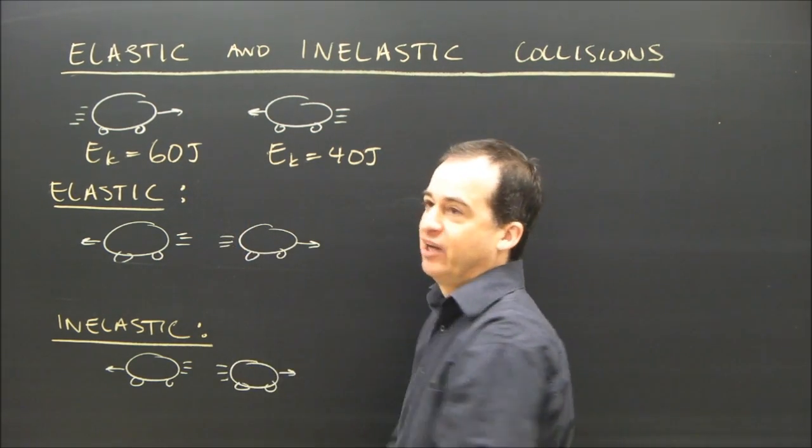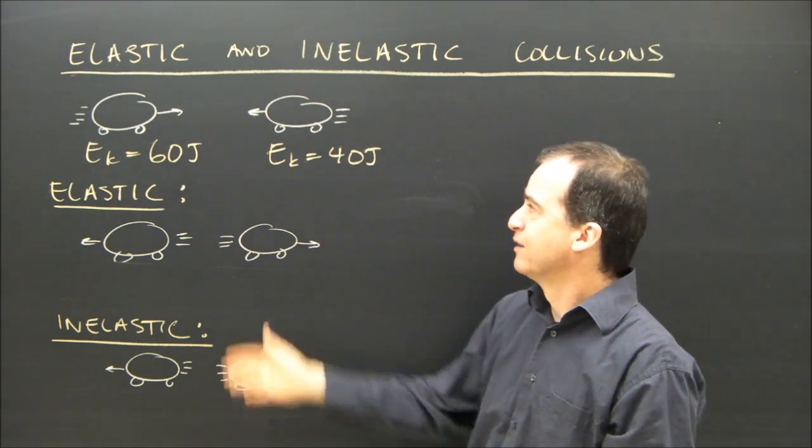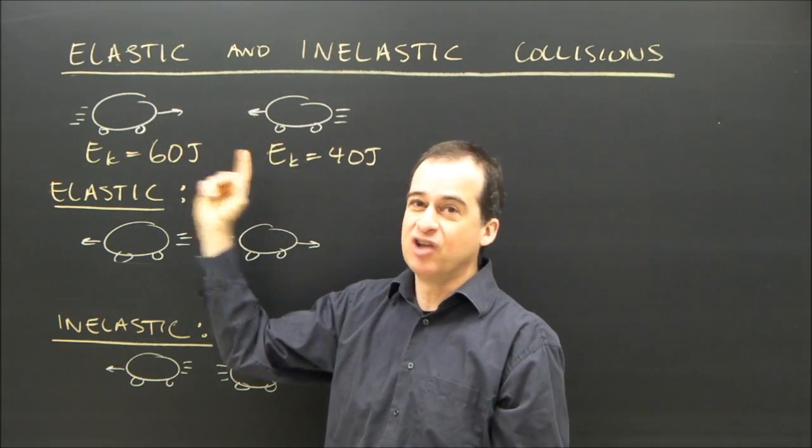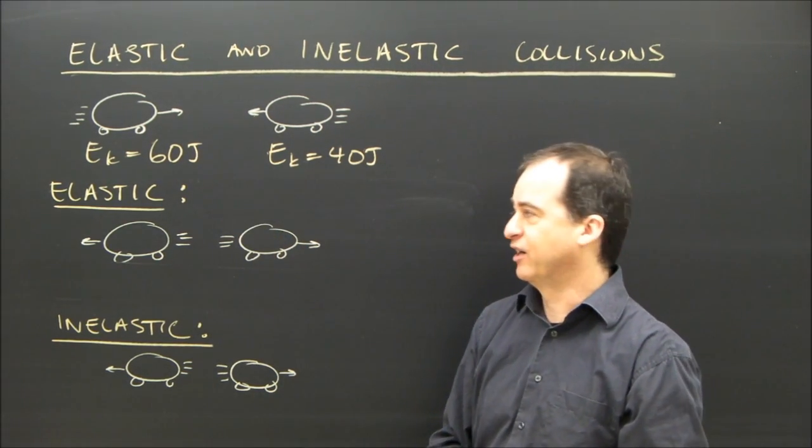So these two carts are going to collide and I look at how much kinetic energy they have: 60 and 40, which adds up to 100. Keep in mind that energy is not a vector, so it doesn't matter which direction the two carts are going, they have a total of 100 joules of kinetic energy.